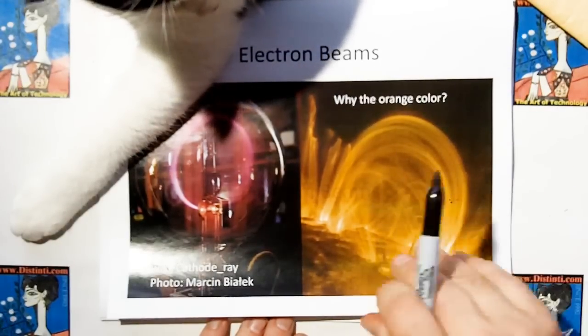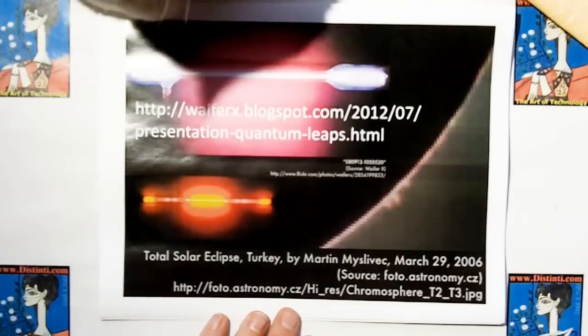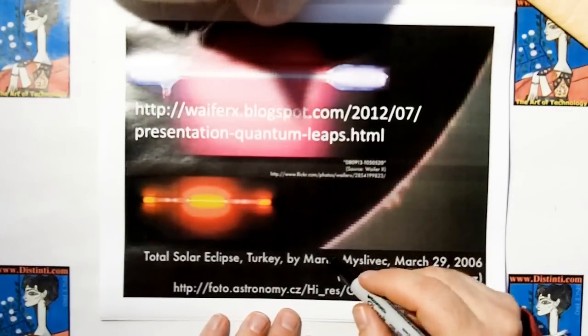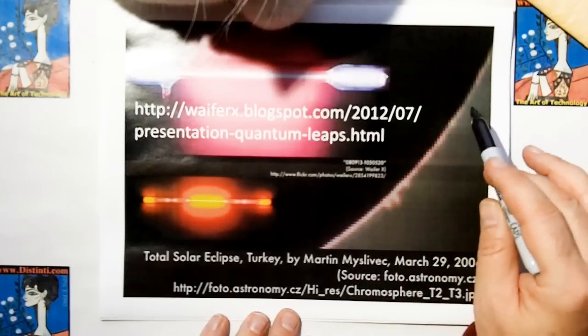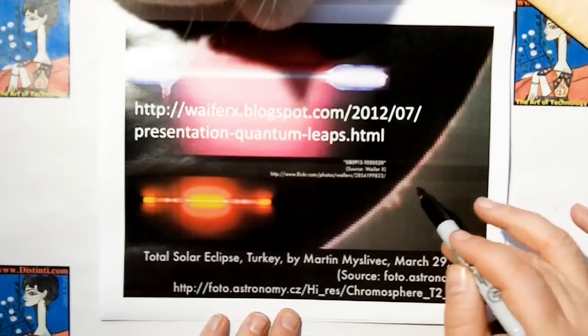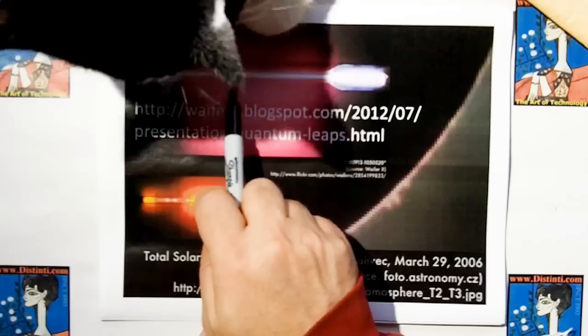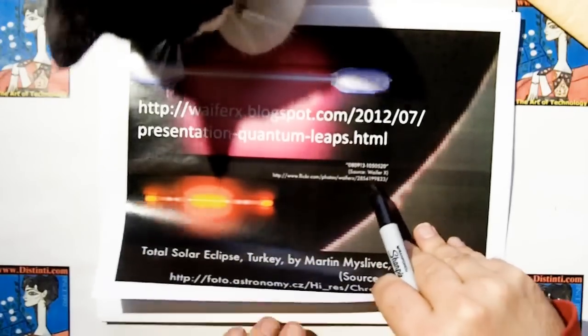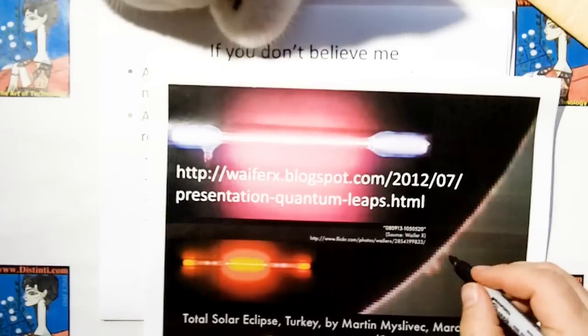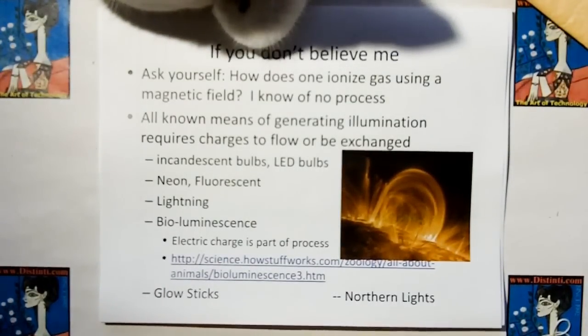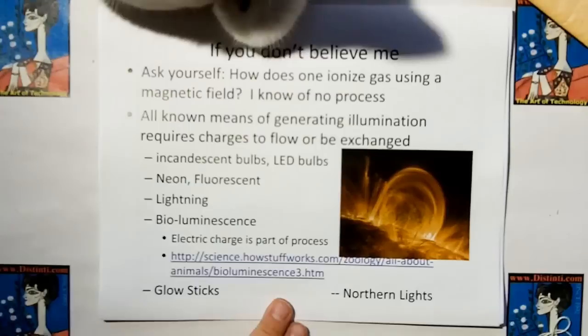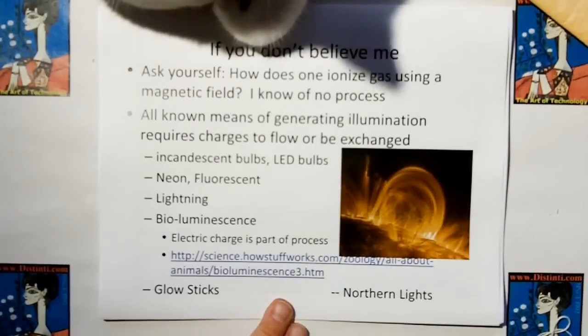But now why does this have an orange color? Well, I find out that this is a false color thing from NASA. So if we go to this other website, you'll see that they have a picture of a solar eclipse where you can see the corona. And this corona is very, very magenta. Well, there's a tinge, a little tinge of orange. And if we pass an electron beam through a tube filled of hydrogen, we get that magenta color. And if you pass it through a tube filled with helium, you get more of an orange color. And so this is mostly hydrogen, maybe with a touch of helium. And if you don't believe me, then ask yourself, how does one ionize gas using a magnetic field? I don't know of any process.